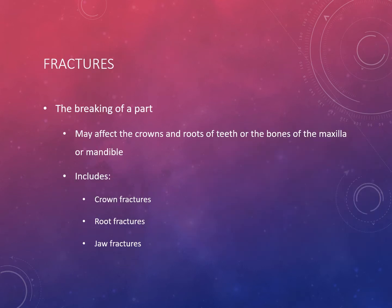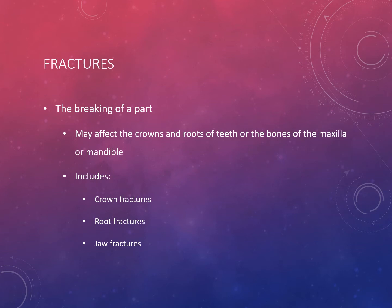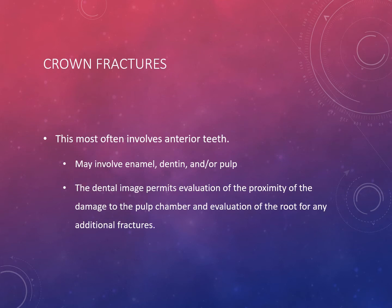A fracture indicates the breaking of a part and can affect the crowns and roots of teeth or the bones of the maxilla or mandible. There are crown fractures, root fractures, and jaw fractures. Whenever a fracture is suspected, a radiographic image examination of that injured area is necessary to fully understand its scope — for example, what appears to be only a root fracture may also involve the alveolar bone.